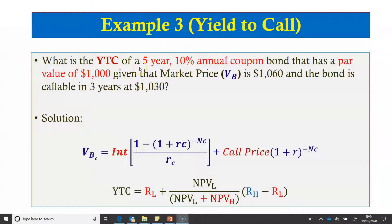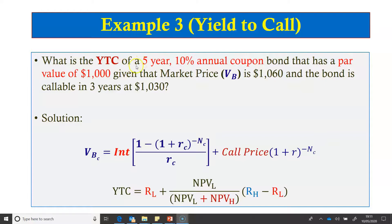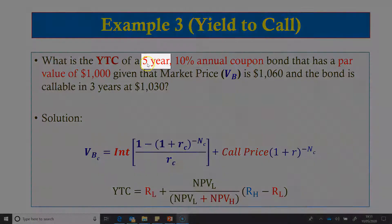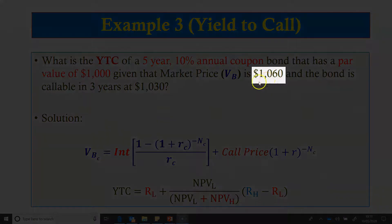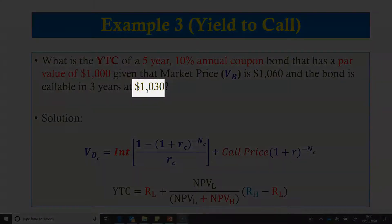For a callable bond, the yield to call (YTC) may be a better measure of return than YTM. We can calculate the YTC following the same rules and procedures as for YTM. In this example, we have a five-year 10% $1,000 par value bond currently selling at $1,060, callable in three years at a call price of $1,030, and we need to calculate its YTC.